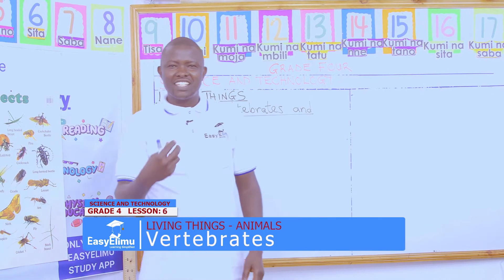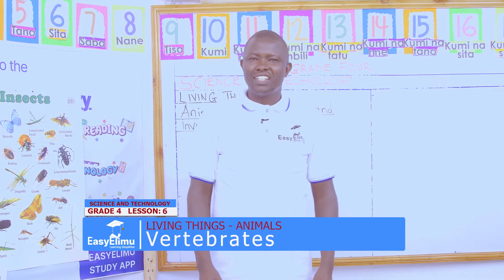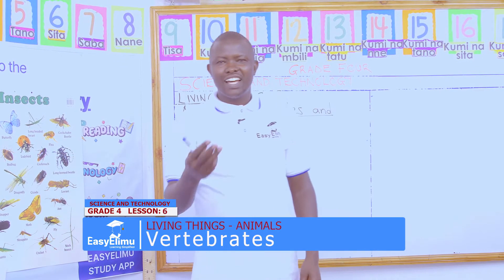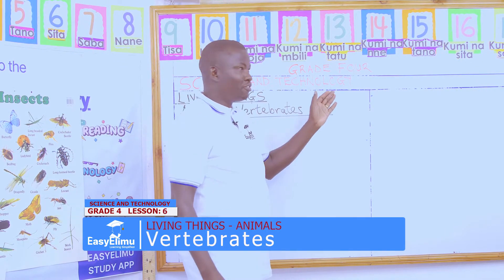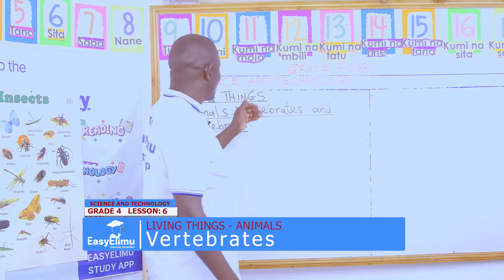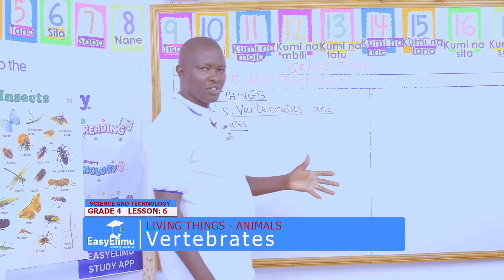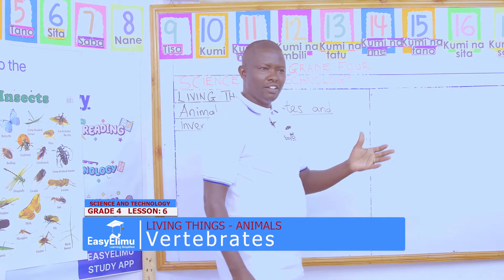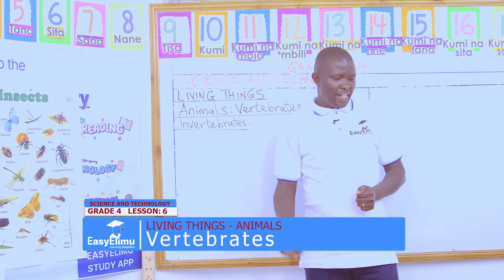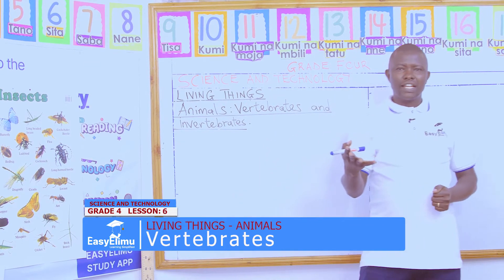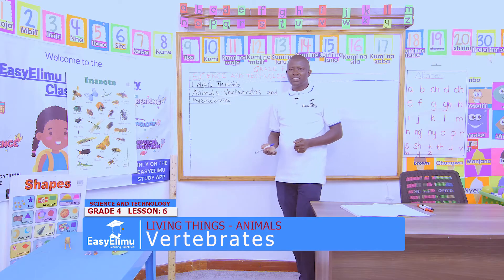Hello, learner. This is Teacher Jonathan. Welcome to Easy Elimu Learning Simplified. This is grade four science and technology on animals — vertebrates and invertebrates. And I will start with a question.